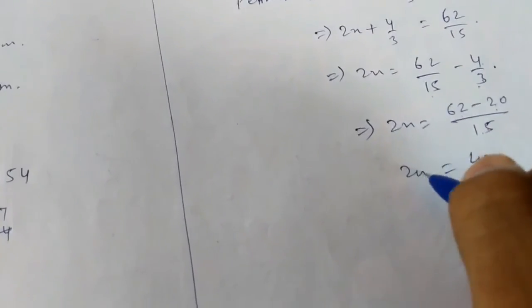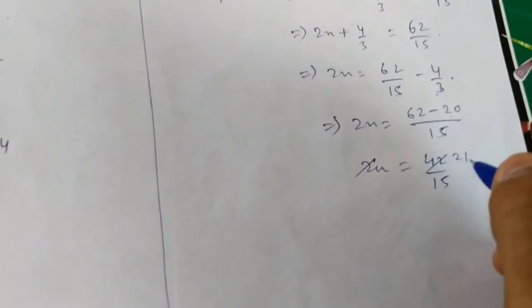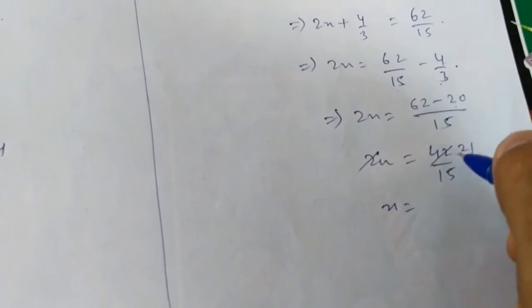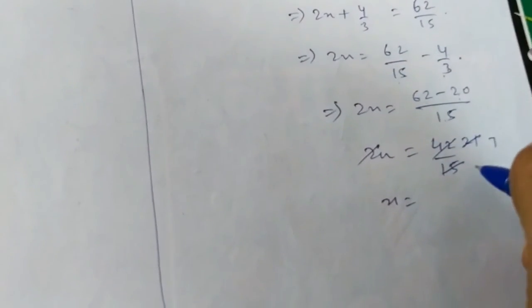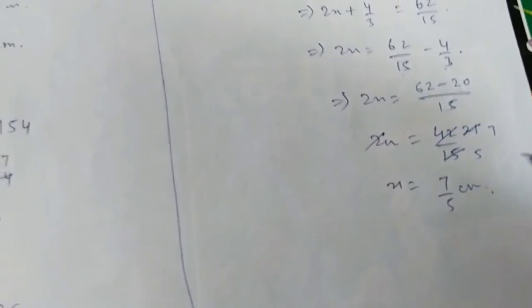2x equals 42 by 15. Canceling by 3, we get 21 by 5. So x equals 21 by 5 divided by 2. Dividing by 3 gives 7 times, which is 7 by 5 cm.